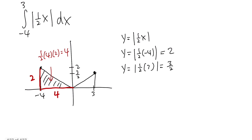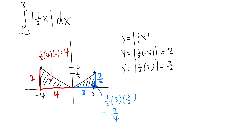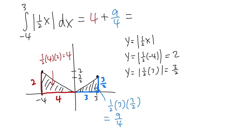For the second triangle, the base goes from 0 to 3, which is 3, and the height is 3/2. So the area is 1/2 times 3 times 3/2 equals 9/4. Adding the two areas: 4 plus 9/4. Getting a common denominator gives 16/4 plus 9/4, which equals 25/4.